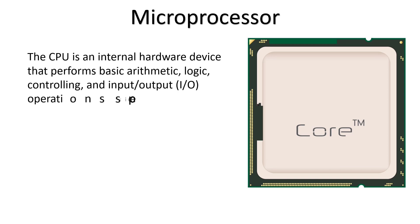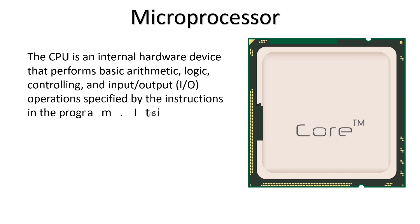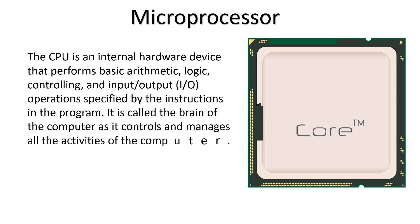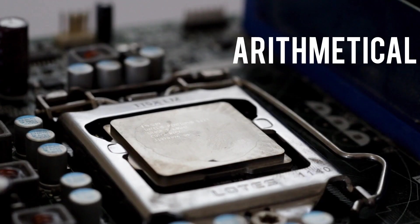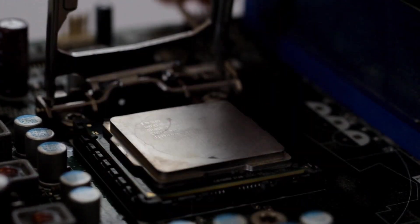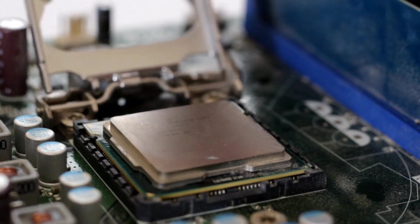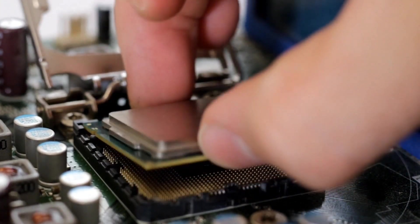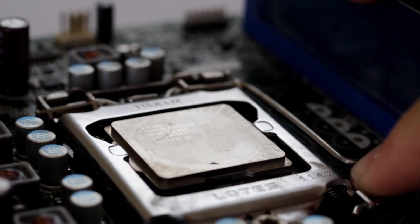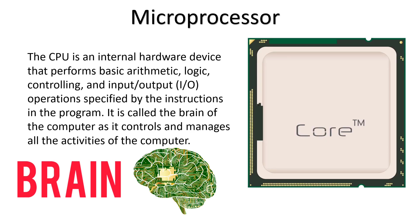The microprocessor is the main processing device of the computer system that processes each and every instruction of programs and software. It performs arithmetic and logical calculations and has the responsibility of controlling and managing every activity of the computer system. That is why the CPU is also called the brain of the computer system.